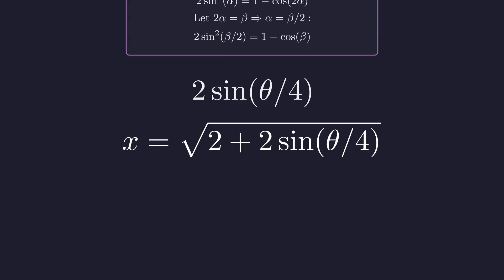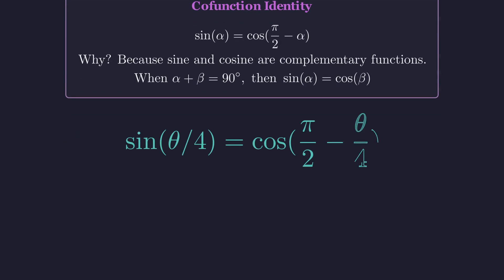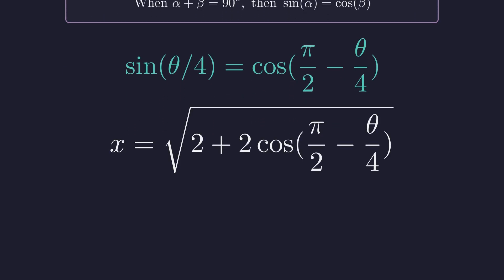We're on the last radical, but we have a sine where we need a cosine. We use the co-function identity to convert the sine back into a cosine. This identity says that sine of α equals cosine of π over 2 minus α. This works because sine and cosine are complementary functions. When two angles sum to 90 degrees, the sine of one equals the cosine of the other. Applying this identity to sine of θ over 4, we get cosine of π over 2 minus θ over 4. Substituting this back, the equation transforms, putting it back into a familiar form.